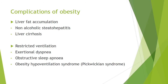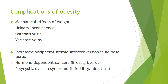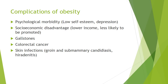There is also restricted ventilation, which includes exertional dyspnea, exertional breathlessness, obstructive sleep apnea, and obesity hypoventilation syndrome, also known as Pickwickian syndrome. The mechanical effects of weight itself can result in urinary incontinence, osteoarthritis, and varicose veins. Increased peripheral steroid interconversion in adipose tissue — when adipose tissue becomes hormonally active due to obesity — can cause hormone-dependent cancers such as breast cancer and uterine cancer, as well as polycystic ovarian syndrome, which includes infertility and hirsutism.